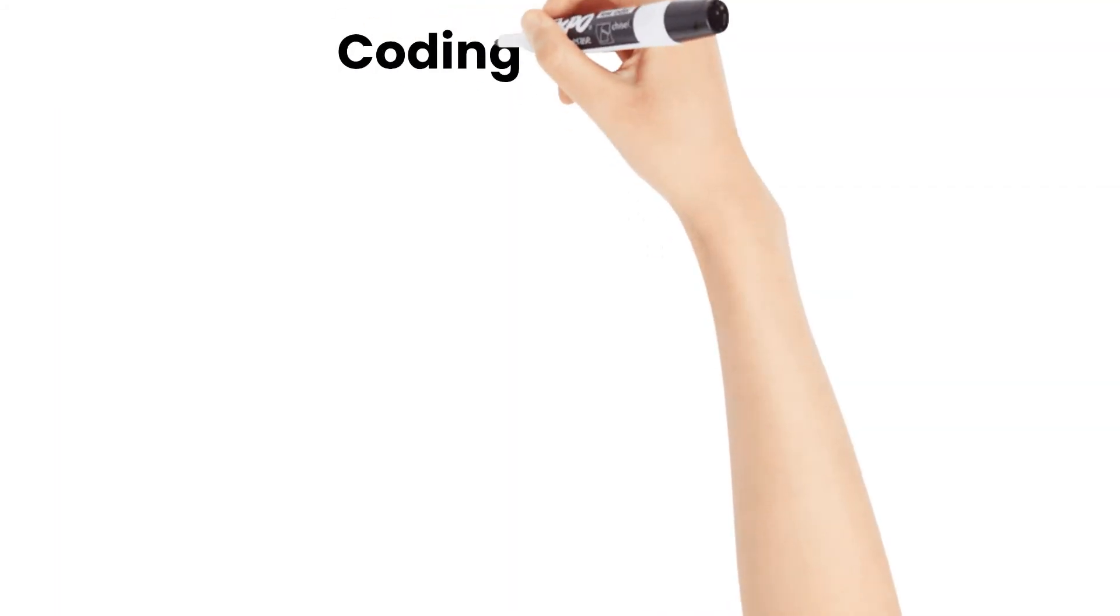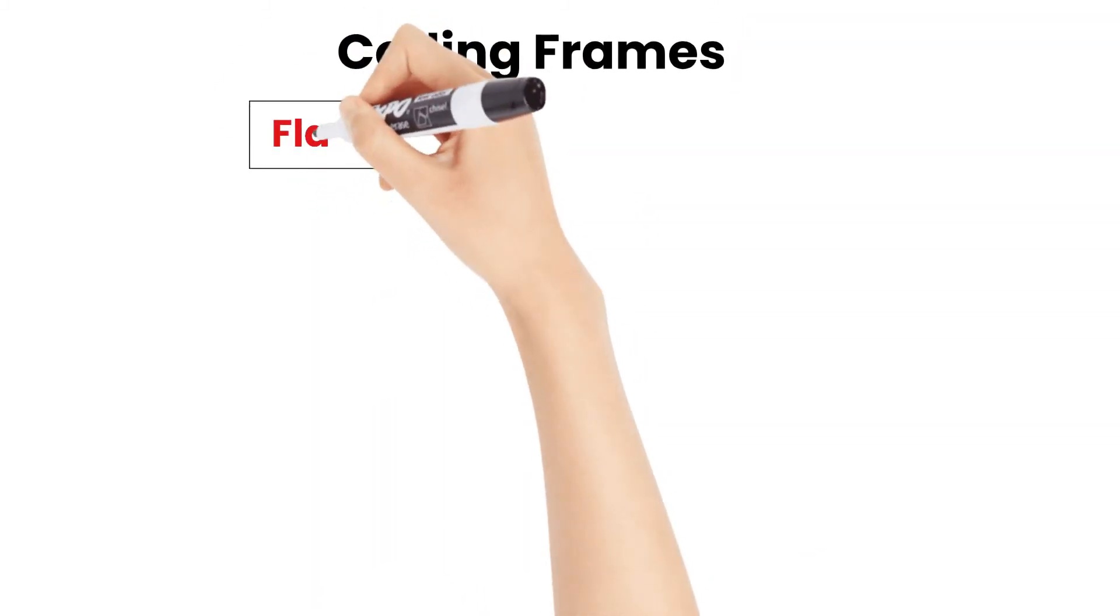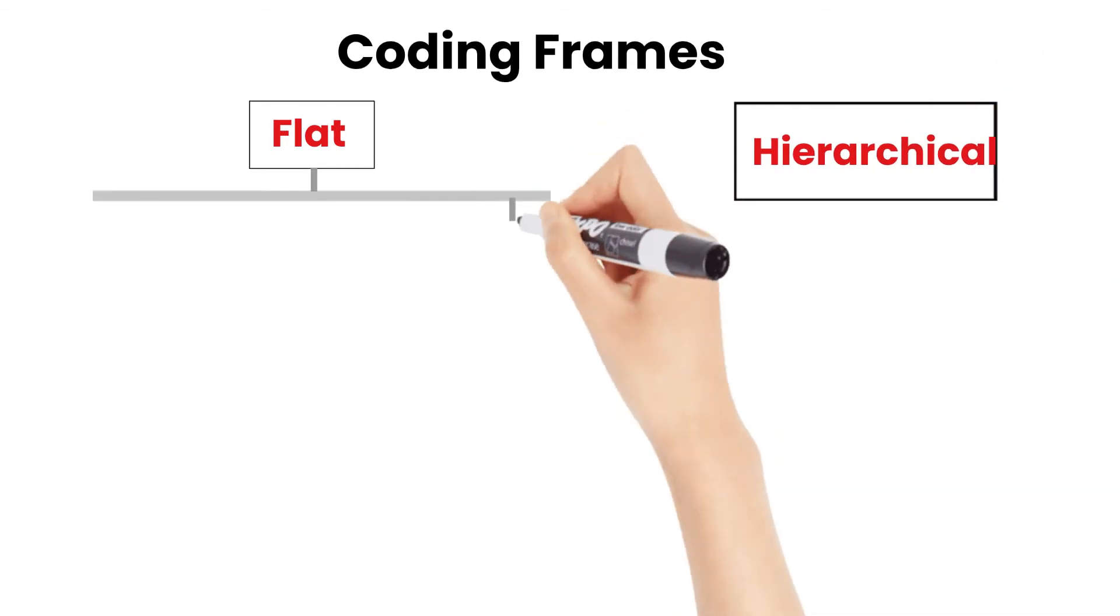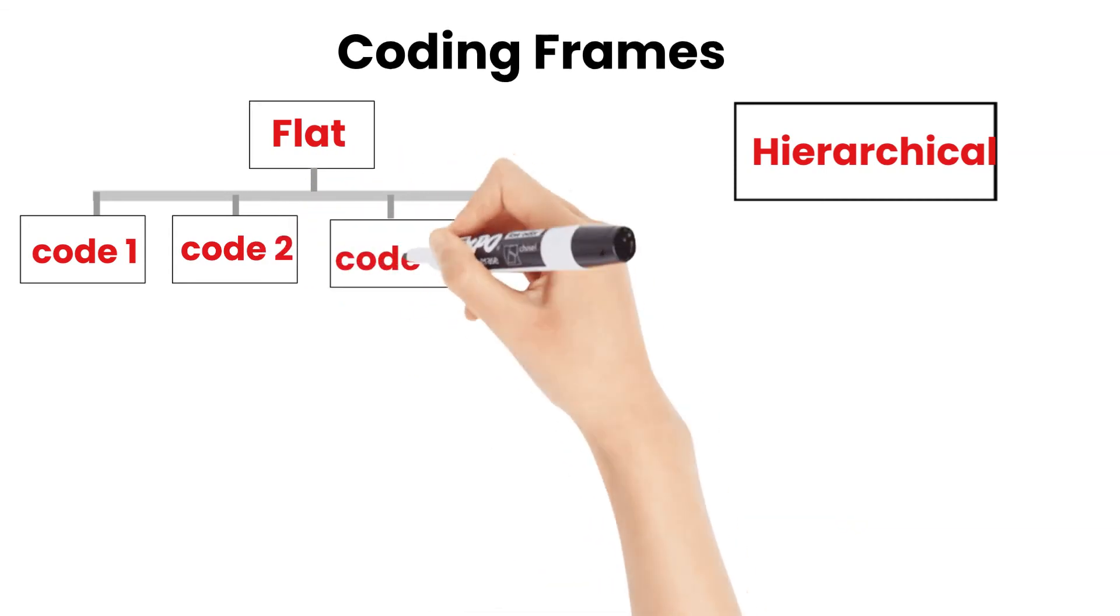Now I am going to tell you coding frames. So commonly there are two types of coding frames, flat and hierarchical. Flat frame assigns the codes at the same level of significance. It is most common and easy while you are doing manual coding.